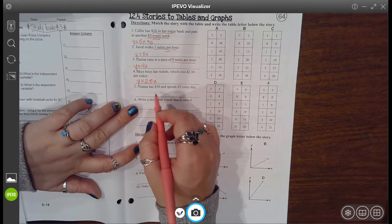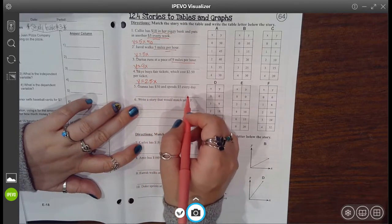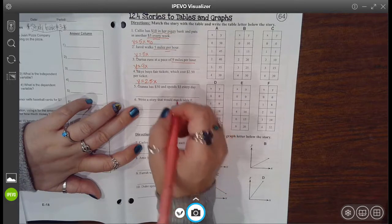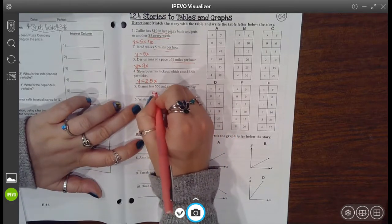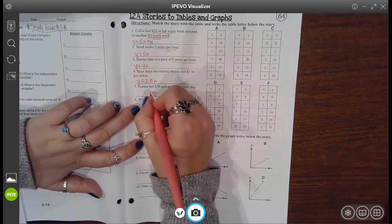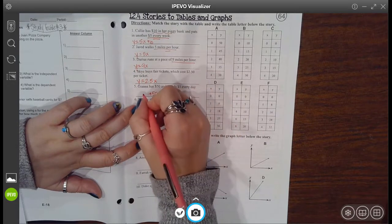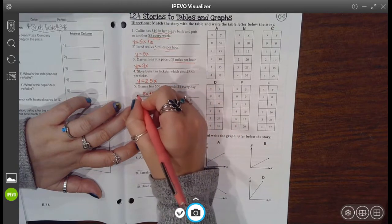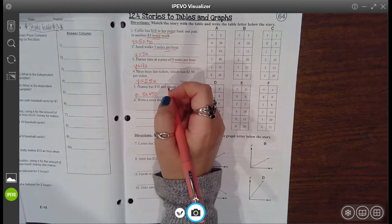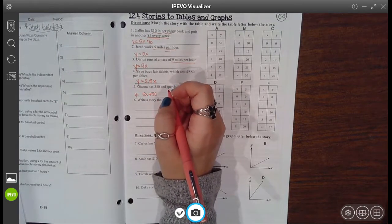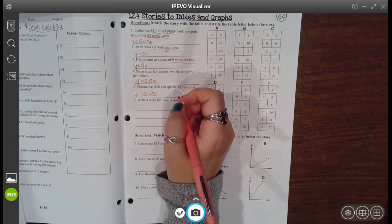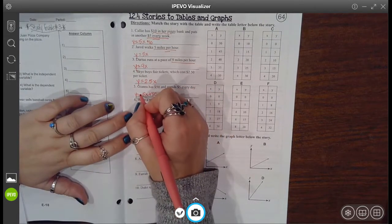This one says Gianna has fifty dollars and spends five dollars every day. Okay, so you have fifty, but you know that five is going to get multiplied by the number of x and that's equal to y. However, I don't know that we've really come across one of these yet, but what does it mean to spend money? It means that it's going away, right?